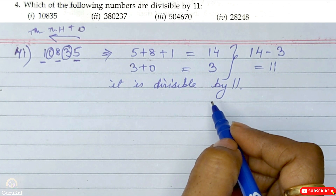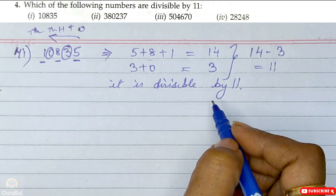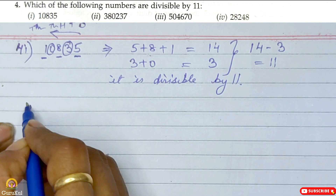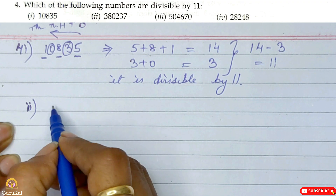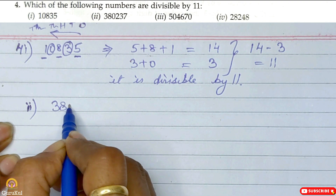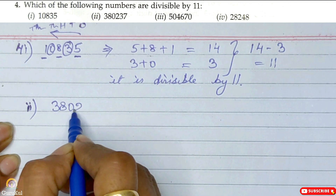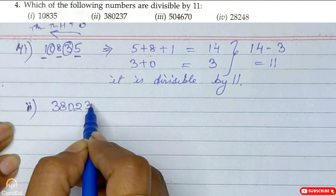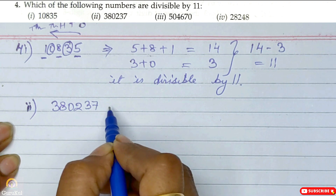If there are any doubts, don't panic — we will solve it and the concept will be clear. Now the second part is the number 3, 8, 0, 2, 3, 7 — that is 380237.